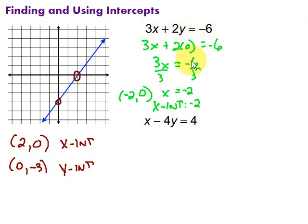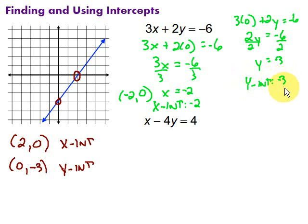So now if I want to find the y-intercept, I'm going to put in 0 for x. So this becomes 3 times 0 plus 2y equals negative 6. That stuff goes away because we multiplied by 0, so we have 2y equals negative 6. Then divide by 2 on both sides, we end up with y equals negative 3. So negative 3 that would be my y-intercept. Or as an ordered pair, it would be 0 because that's what I put in for x, negative 3.